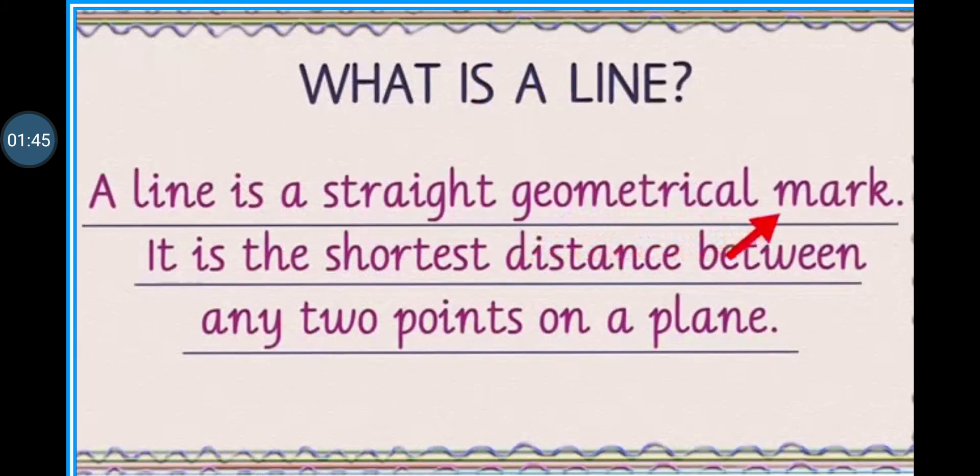So first of all you all know that what is a line? A line is a straight geometrical mark. It is the shortest distance between any two points on a plane.